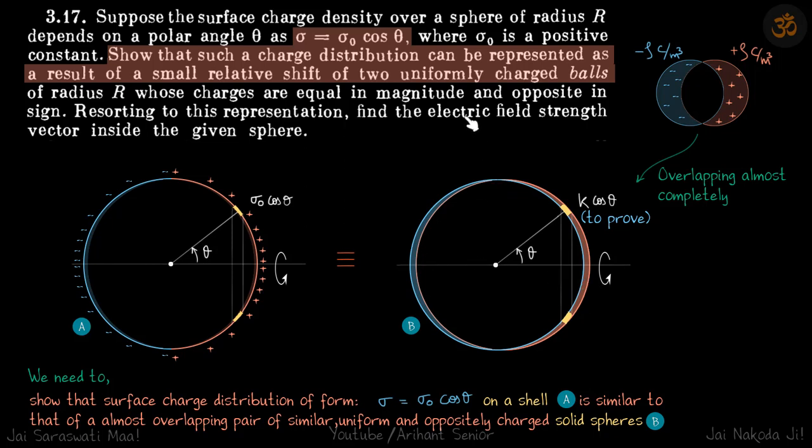Now second part we need to find the electric field strength inside the given sphere. He is saying sphere what he means is this shell. Inside this shell, we need to find electric field. Now here, if you want to find you need to take elements like this, these rings and find a small field dE and then need to integrate it. But we have already proven that this charge distribution is similar to this. And from here, we can find the field inside without any calculation.